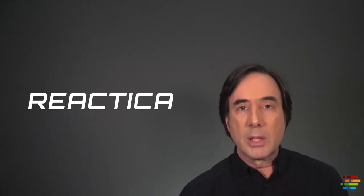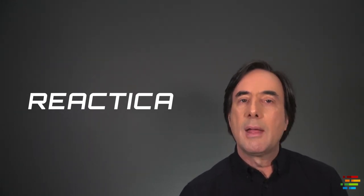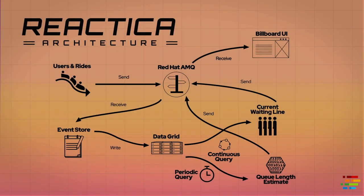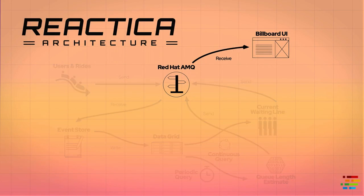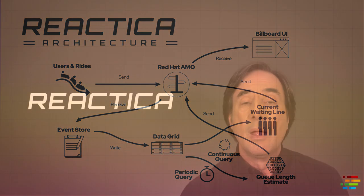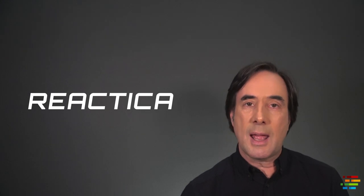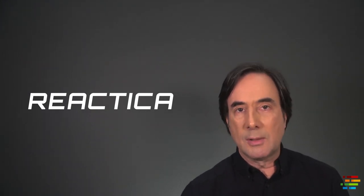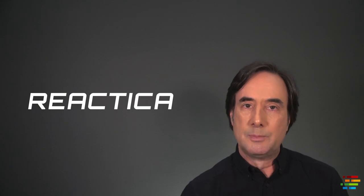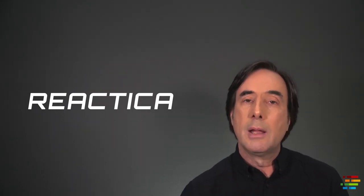It's a great architecture for dealing with asynchronous data in a reactive system. The last component, and the one that ultimately does the work we set out to do, is the billboard UI. It subscribes to two queues at the AMQ message broker — one queue is data sent by the current waiting line component, the other is sent by the queue length estimate. Anytime new data about the current line or wait time is sent to AMQ, the billboard component receives that data and updates its display. We'll look at the web UI in the next video.